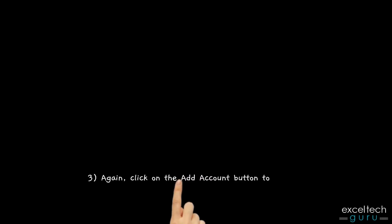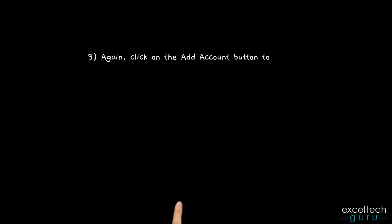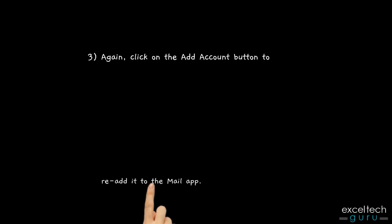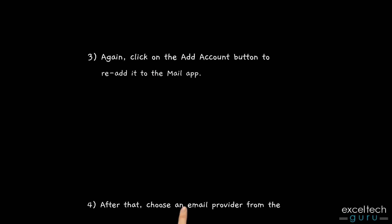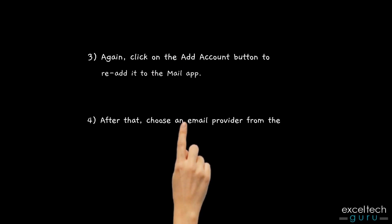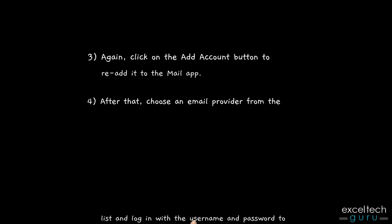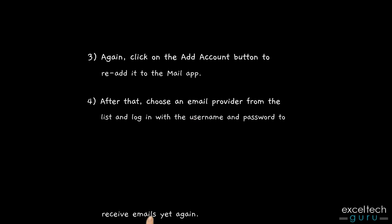Step 3: Click on the Add Account button to re-add it to the mail app. Step 4: After that, choose an email provider from the list and log in with the username and password to receive emails again.